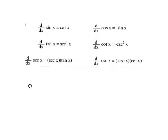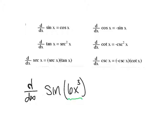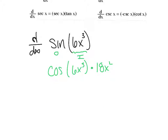Let's look at our first example: take the derivative of sine of 6x cubed. Why is this chain rule? Once I say 'of,' we have an inside. The 6x cubed is inside the sine function; sine is on the outside. Take the derivative of the outside — the derivative of sine is cosine. Keep the inside, then multiply by the derivative of the inside. The derivative of 6x cubed is 18x squared. So the final answer is 18x squared cosine of 6x cubed.